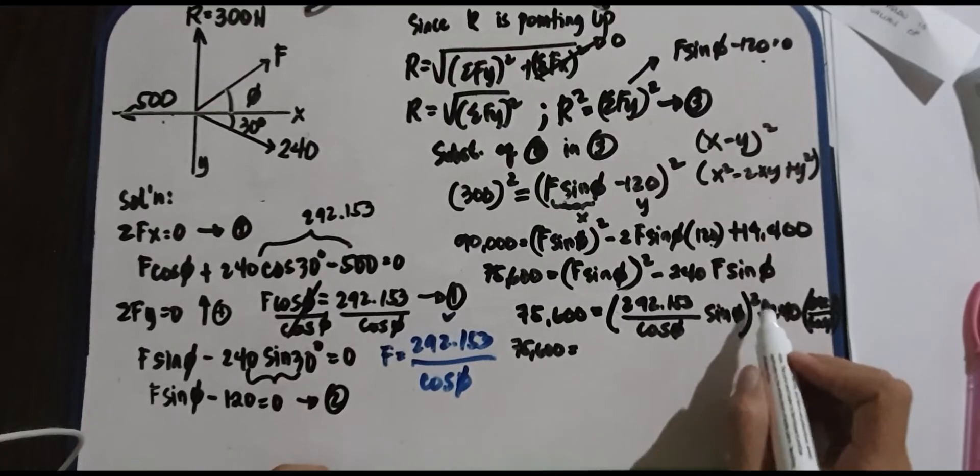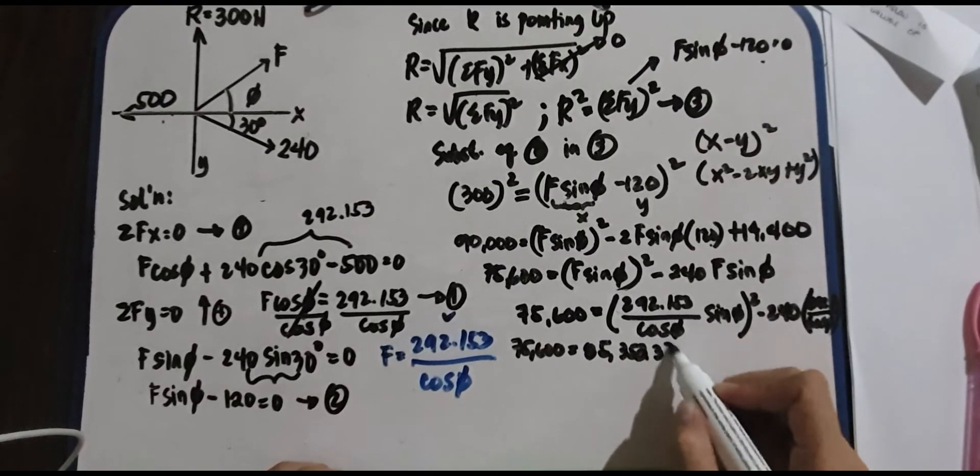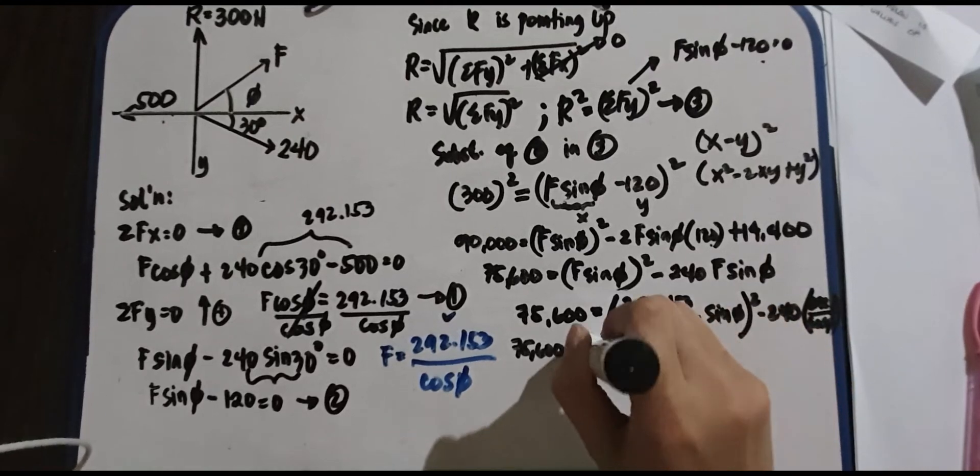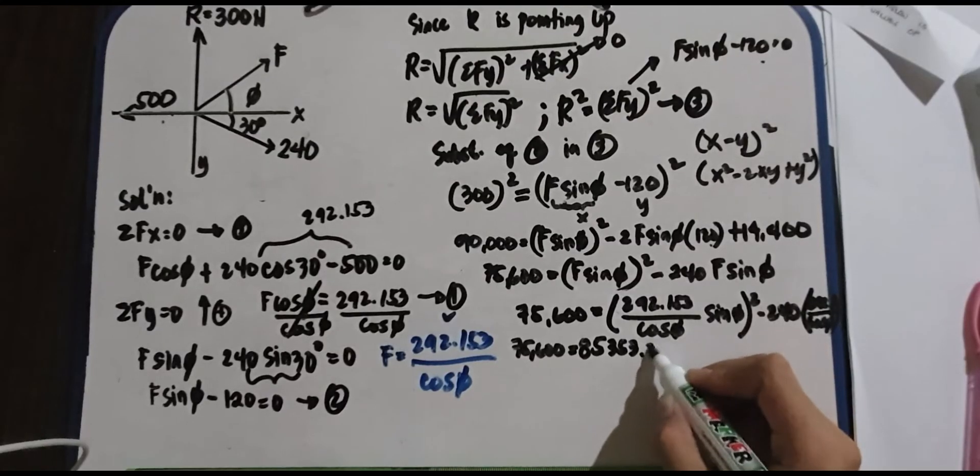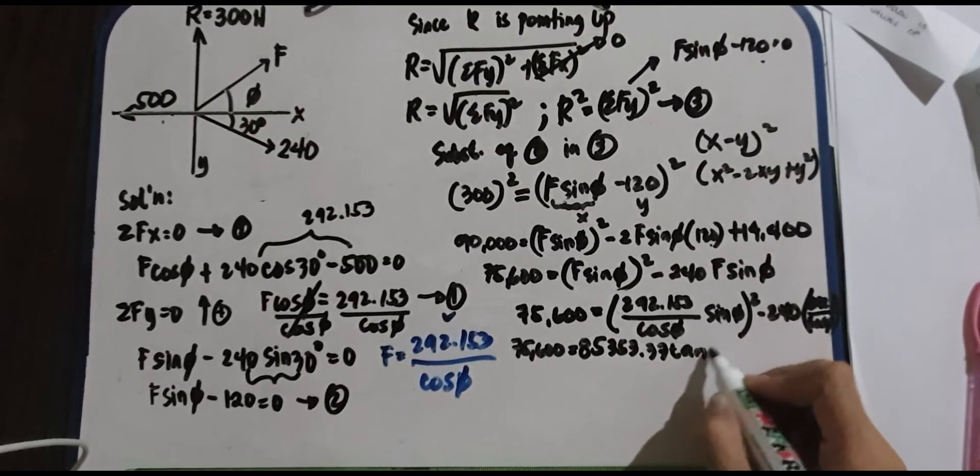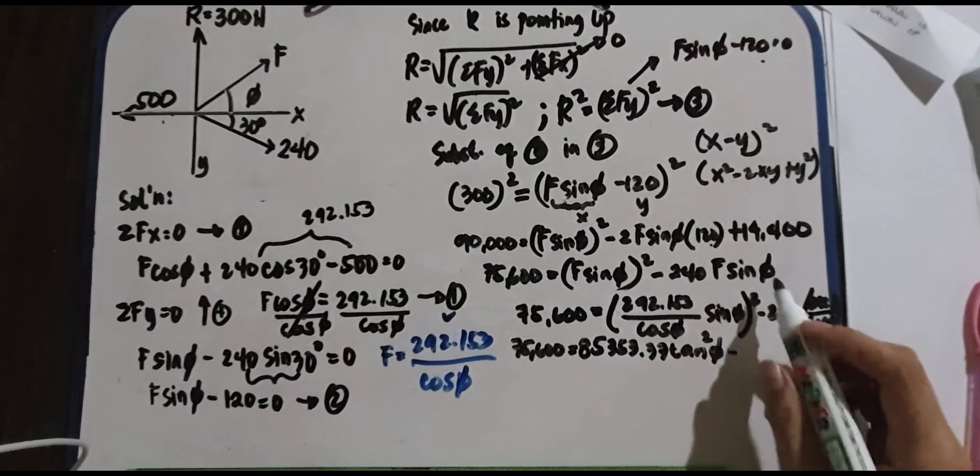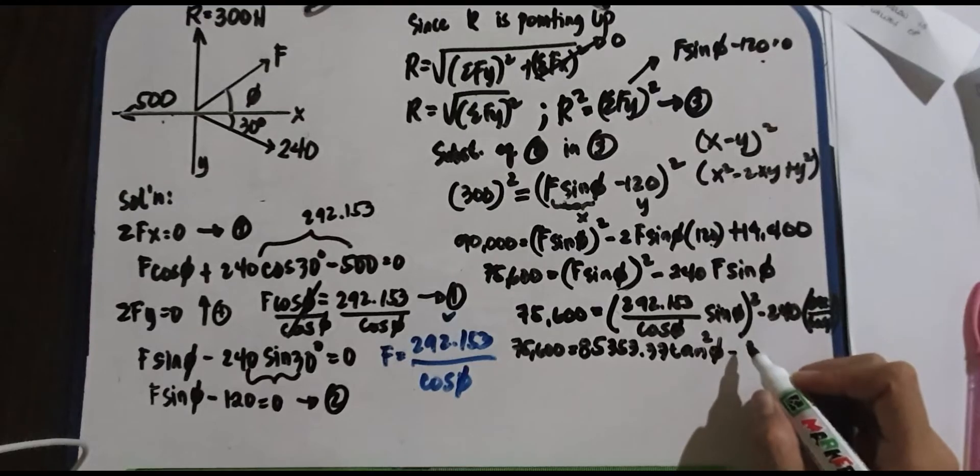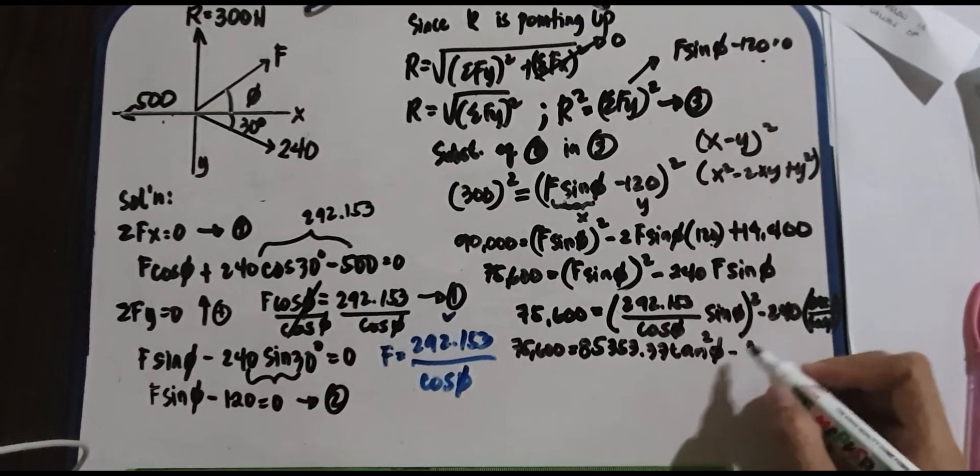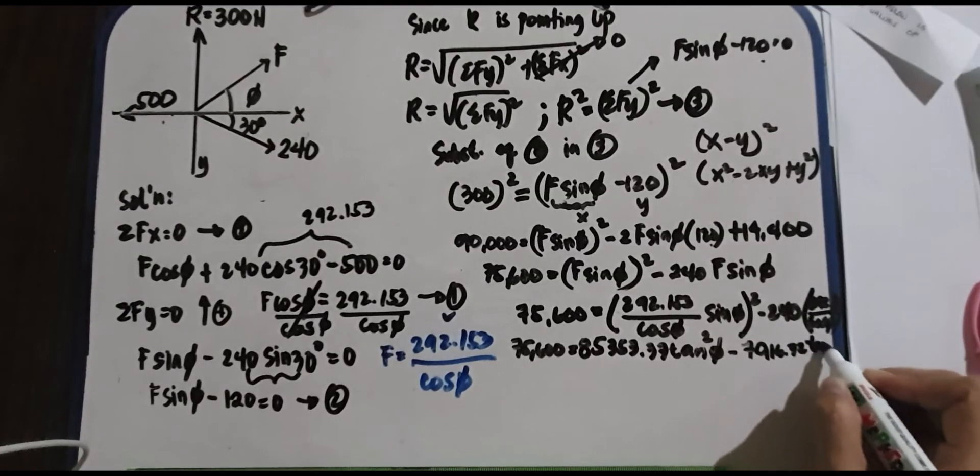So we have 75,600 equals sine all over cosine that is tangent. So 292.153 squared is, what is it? 85,353.37. We have 85,353.37 sine all over cosine is tangent phi, this is squared, minus we have 240 sine all over cosine that is tangent also. We have tangent, let's put it, tangent of 120 times 290, sorry, 240 times 292.153 is 71,116.72 tangent of phi.